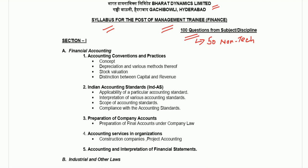In Section 1, the first part is financial accounting. In that, the first topic is accounting convention and practice. Here they are asking the basics of accounting topics such as concept of accounting, depreciation and methods, stock valuation, and difference between capital and revenue. So these are the basic accounts topics.